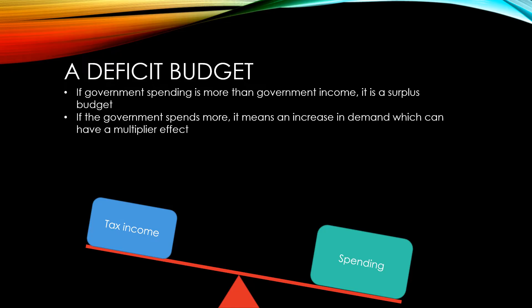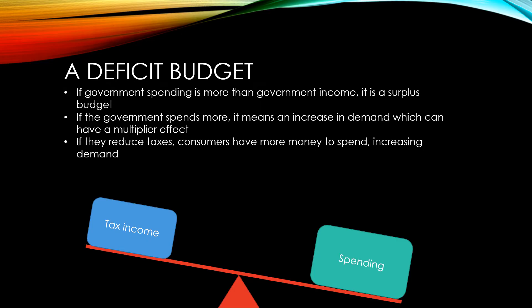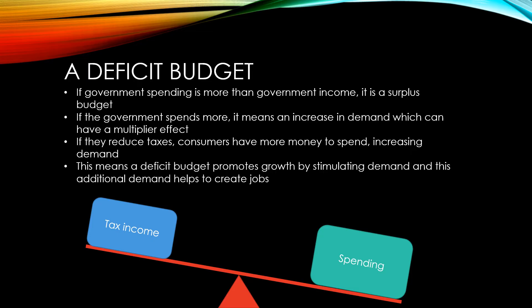If the government spends more, it means an increase in demand for firms which provide the goods and services which they need to buy. This can have what's known as a multiplier effect, which we'll explore in later videos. If they reduce taxes, consumers have more money to spend, increasing demand in the economy. A deficit budget promotes growth by stimulating demand, and this additional demand means firms need more workers and helps to create more jobs.